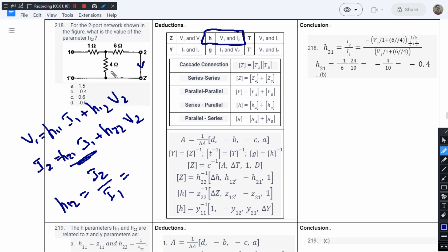So if you want to apply the current division rule, we will have to assume that we have got a voltage source here, let us call it V1. So here we will have V1 and the total current is going to be V1 divided by this total resistance. Here the total resistance is 1 plus 6 parallel 4. Now this is the total current, but what we want is the current that is flowing through this 6 ohm.